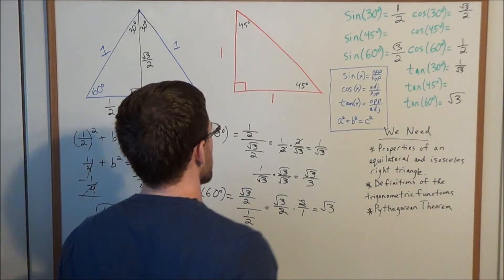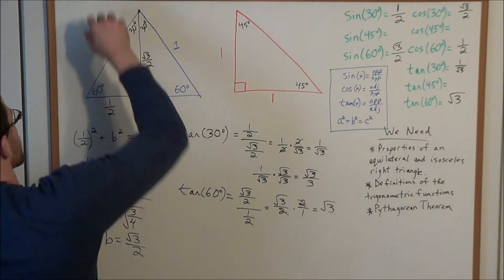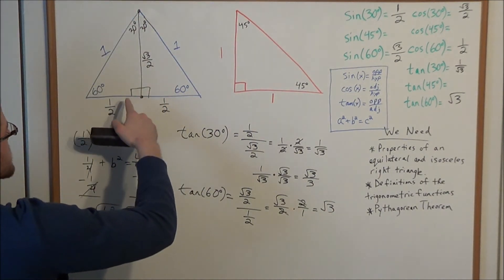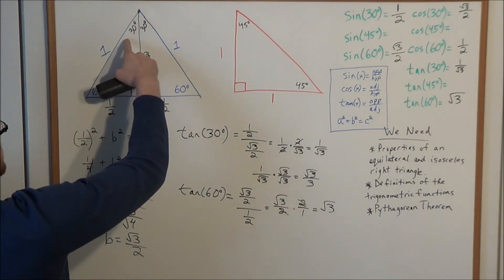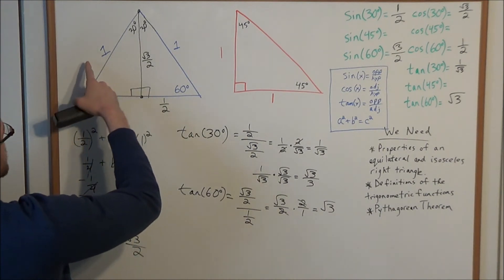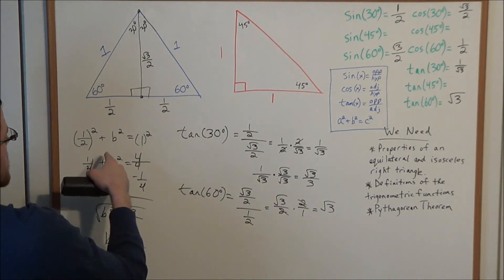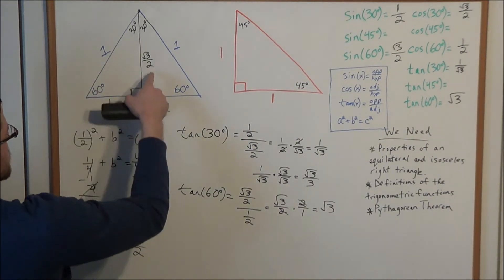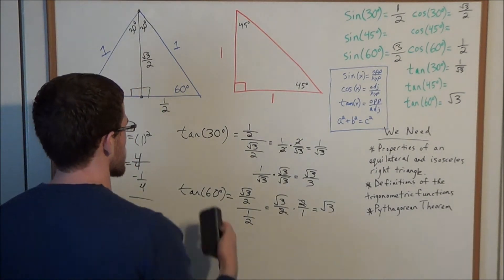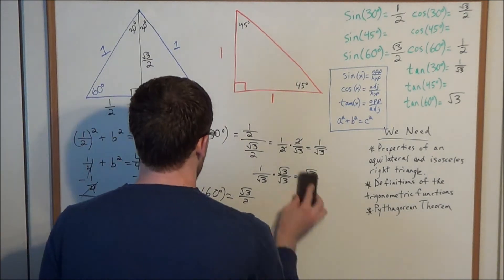This concludes the examples using the equilateral triangle. To recap: drop down a perpendicular bisector creating a 30-60-90 triangle with side lengths one and one half, then use the Pythagorean theorem to find the square root of three over two. The more you practice, the faster you'll recognize that missing side is the square root of three over two.